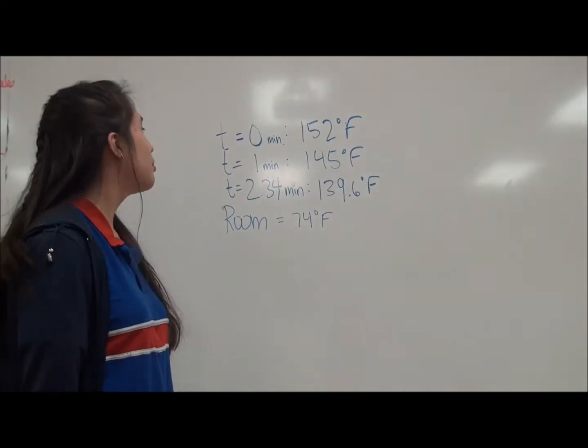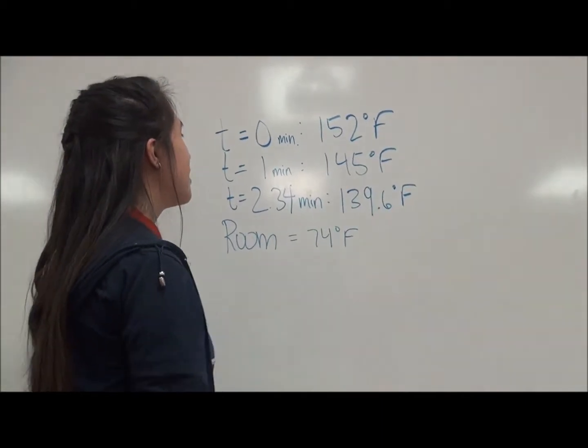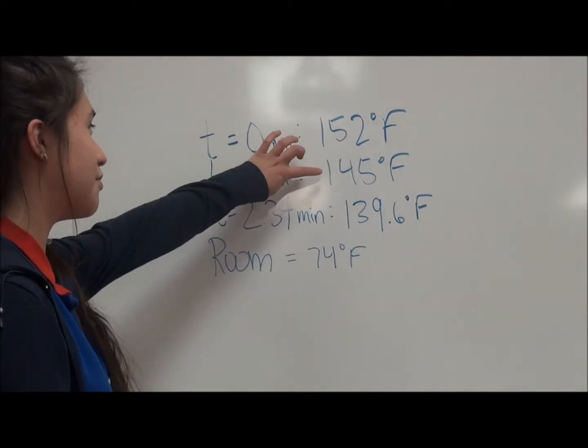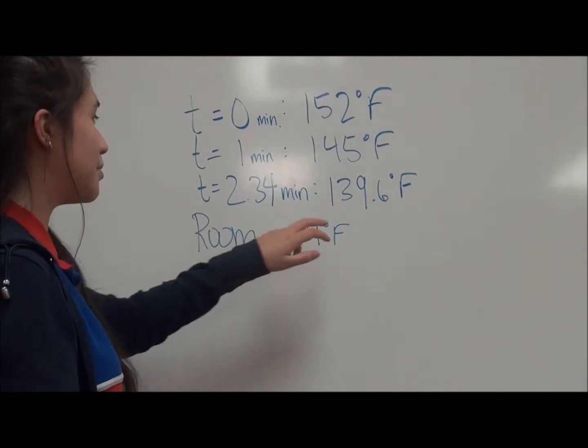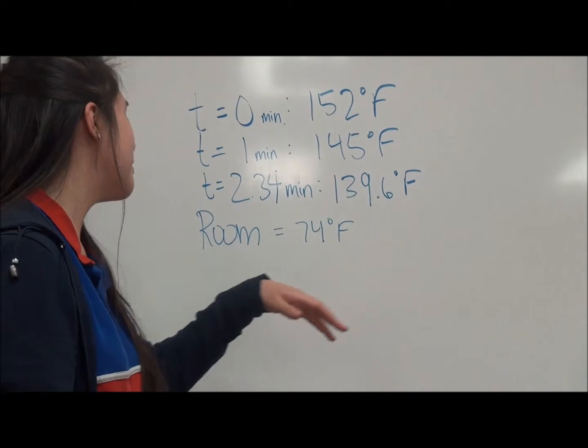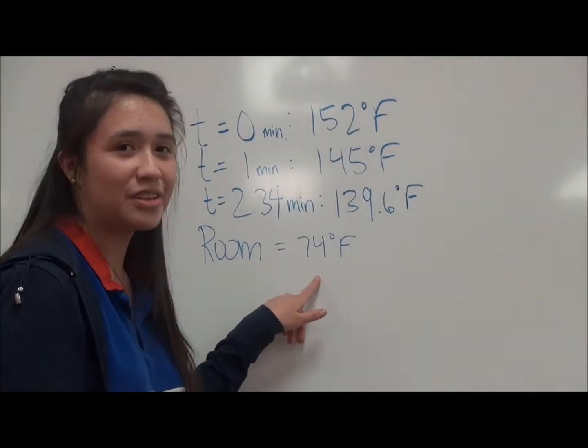When I first put the thermometer in the coffee, it was 152 degrees Fahrenheit. After a minute it was 145 degrees Fahrenheit. At 2.34 minutes it was 139.6 degrees Fahrenheit. And the surrounding temperature of the room is 74 degrees Fahrenheit.